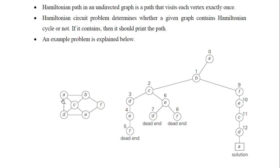I will take A as the starting vertex. From A, I can visit B, C, or T. I will try visiting B first. From B, I can travel to C or F. I will try C. From C, I can move to D. From D, I can move to E. From E, I can move to F. From F, I could not reach A. So this is a dead end and I have to backtrack.